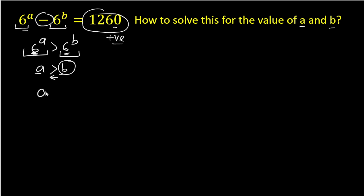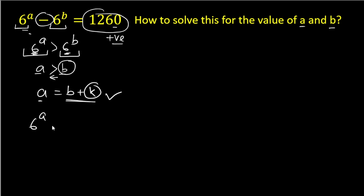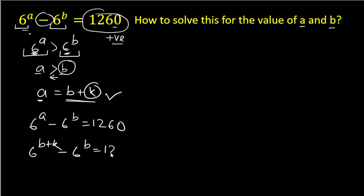Since a is greater than b, we can write a as equal to b plus some constant k. We substitute b plus k in place of a in the expression, giving us: 6^(b+k) minus 6^b equals 1260.